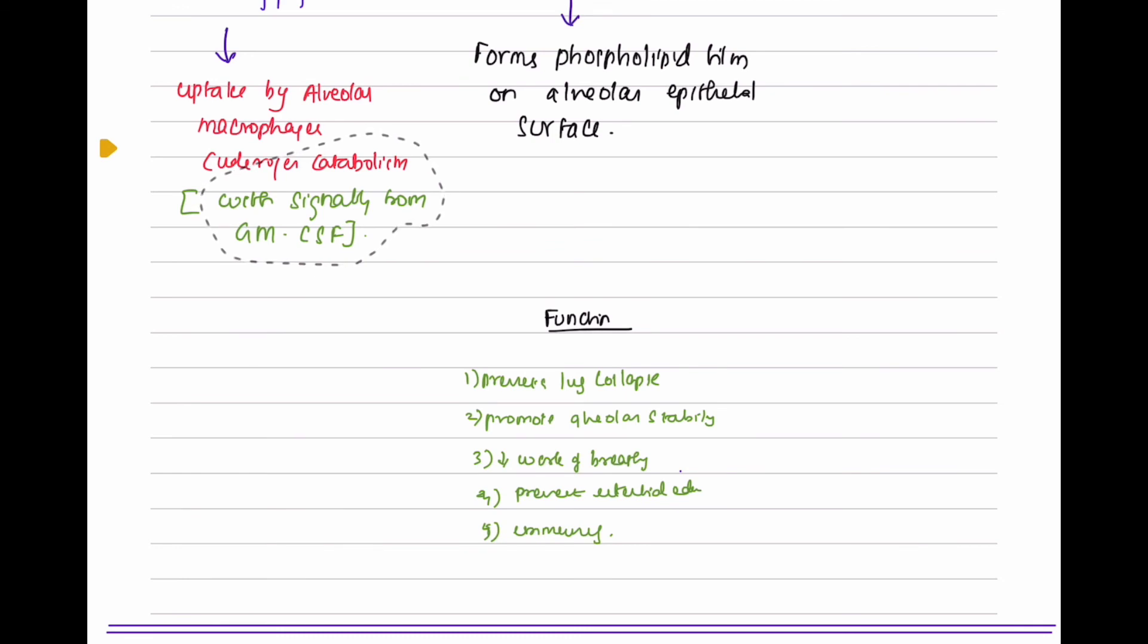Functions of surfactant: They prevent lung collapse, promote alveolar stability, decrease the work of breathing, prevent interstitial edema, and play a role in immunity.